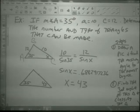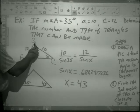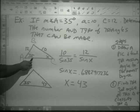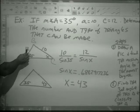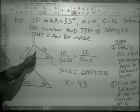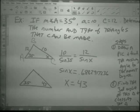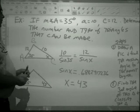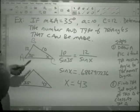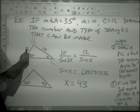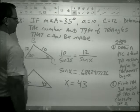Determine the number and type of triangles. They give me an angle, the side across from that angle, and another side. I want to find the angle across from that side. I am going to use law of sines to find the missing angle. 10 over sine 35, 12 over sine X. Use law of sines.